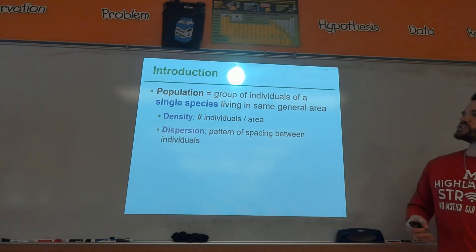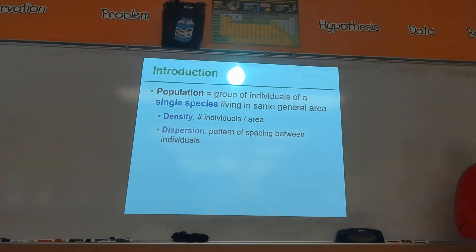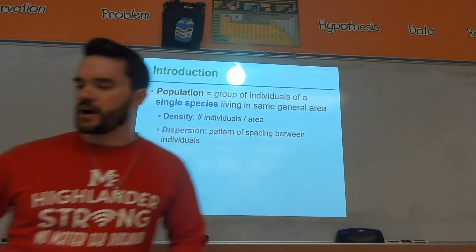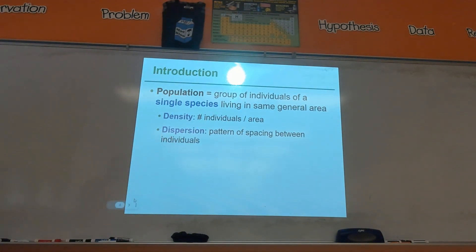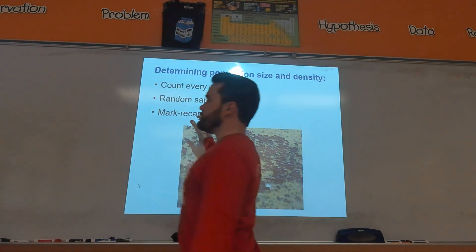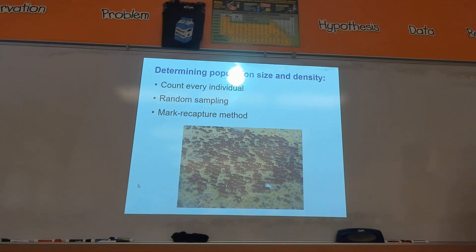When you're studying a population, you can look at the dispersion — that's the pattern of spacing between individuals. There are three kinds of dispersion. Now, how they can measure population: the most complicated way, but technically the most accurate, is you literally count every individual. But logistically, that's pretty difficult to do.